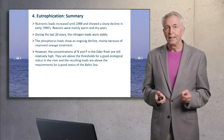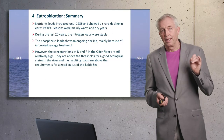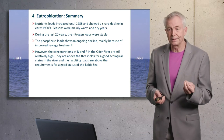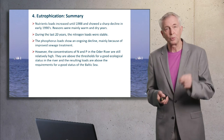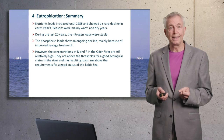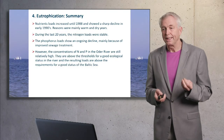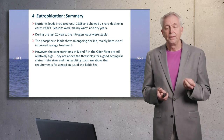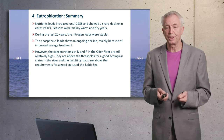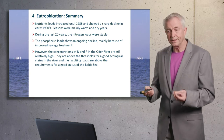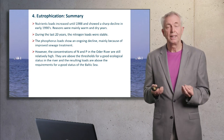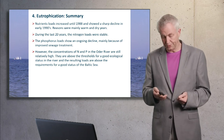With respect to phosphorus, this is different: during the last 20 years a decline in phosphorus loads was visible, because stepwise the sewage treatment technique was improved, causing a reduction of pollution by cities — a positive trend. To summarize: nutrient loads increased strongly until 1988, then showed a sharp decline due to relatively dry years — the first climate change years. During the last 20 years, no change with respect to nitrogen loads but a decline in phosphorus loads. However, concentrations of nitrogen and phosphorus in the river are still relatively high, above the threshold for good ecological status, and the resulting loads are above the requirements needed for bringing the Baltic Sea into good status.